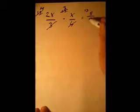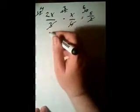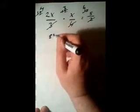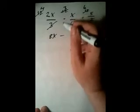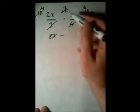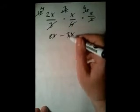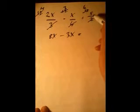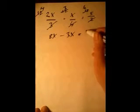3 goes into 12 four times, 4 goes into 12 three times, and 2 goes into 12 six times. So we're left with 4 times 2x, which is 8x, minus — don't forget the minus — 3x, equals 6 times 5, which is 30.